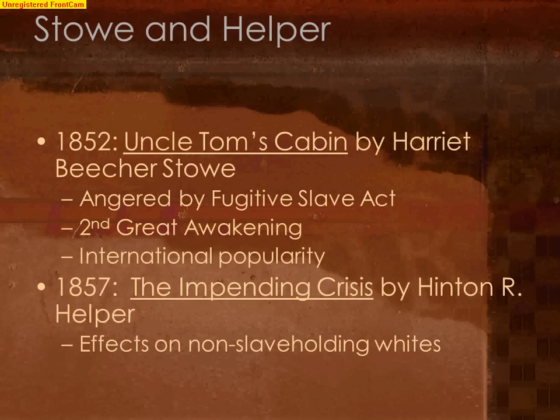The first is Harriet Beecher Stowe's Uncle Tom's Cabin. Harriet Beecher Stowe's father was a minister during the Great Awakening, Lyman Beecher. Her brother was a radical abolitionist, and she herself was obviously an abolitionist as well. Angered by the Fugitive Slave Law, she wrote Uncle Tom's Cabin, in which she hoped to depict the evils of slavery and how it split families apart. In some cases, the slaves were beaten to death.